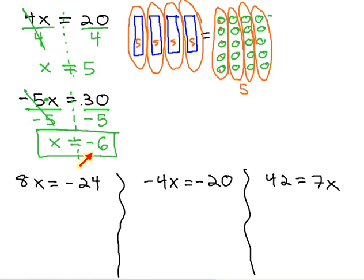Notice, negative 5 times negative 6 equals 30. We can follow this same pattern on these other examples.